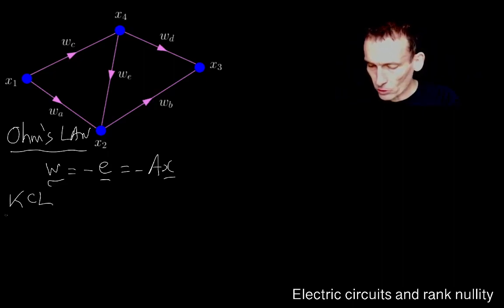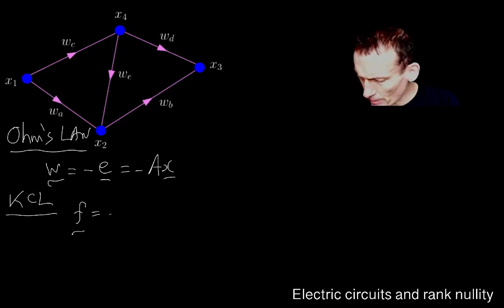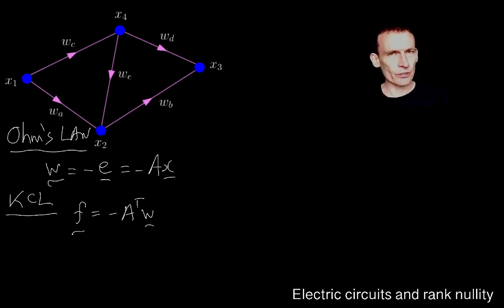And then we had Kirchhoff's current law, with the acronym KCL for the purposes of brevity, tells us about the divergence of the currents at the nodes. And in particular, if the node is just free, so it's not attached to any current source, then Kirchhoff current law says that the value of the divergence at that node must be zero.